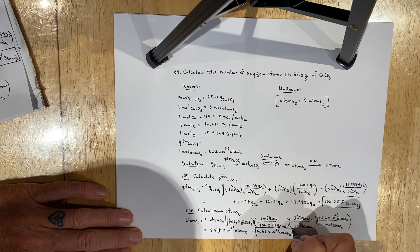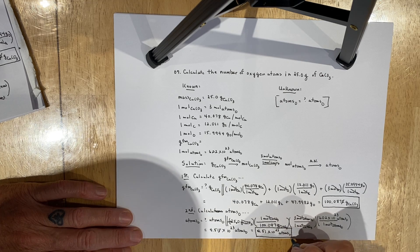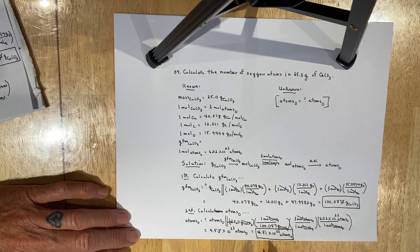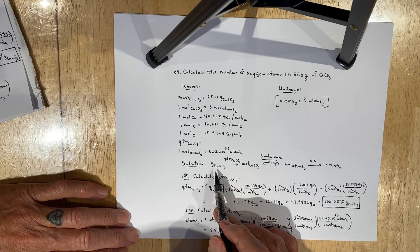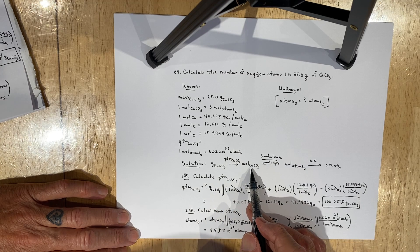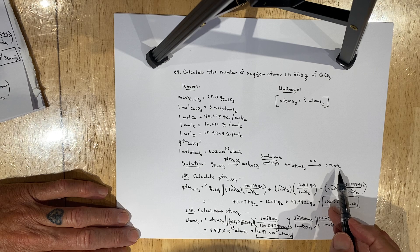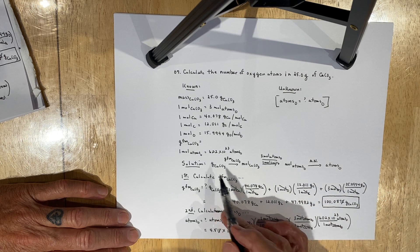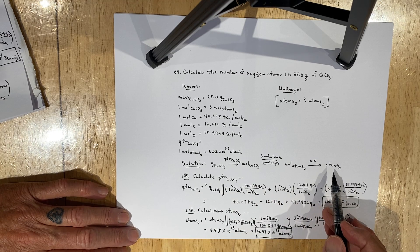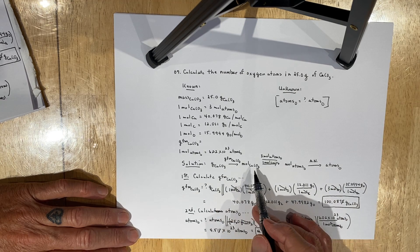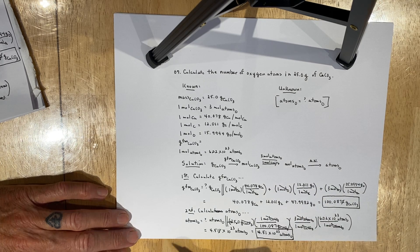In calculating this, we had to make three conversions: from grams to moles of calcium carbonate, to moles of oxygen atoms, and then to atoms of oxygen. This is how you convert grams into atoms — the beauty of dimensional analysis, which allows you to take a relatively complex problem and break it down with several unit conversions and simplify it.